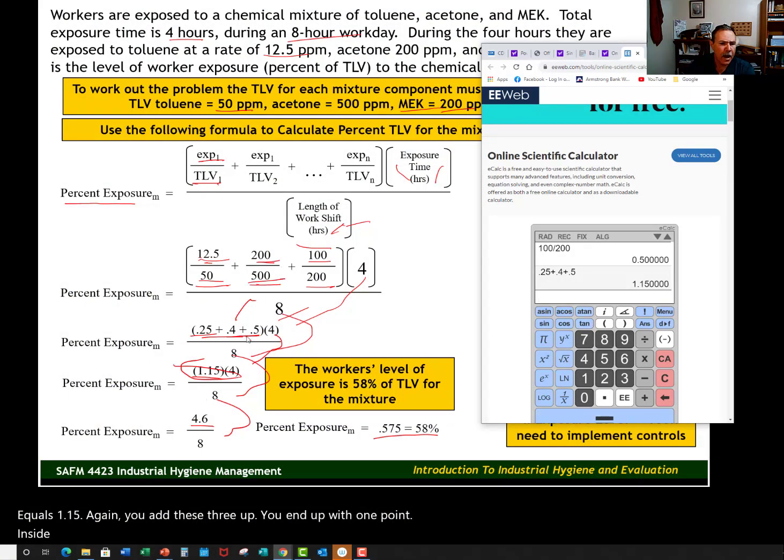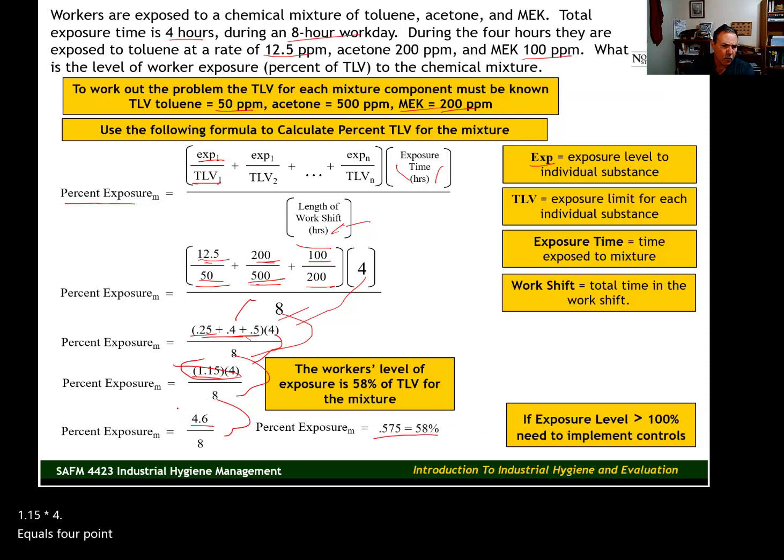Now we want to multiply 1.15 times 4. 1.15 times 4 equals 4.6, and there we are right there with the 4.6.